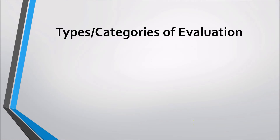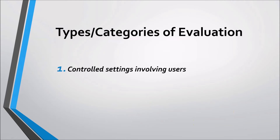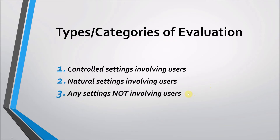Since we're talking about evaluation, let's look at the different types and categories of evaluation. The first one is controlled settings involving users. The second one is natural settings involving users. And the last one is any settings not involving users. These first two categories involve users. User participation in evaluation tends to occur in the later stages of development when there is at least a working prototype already in place. In the third category, evaluation is through analysis by the designer or an expert evaluator rather than testing with actual users.